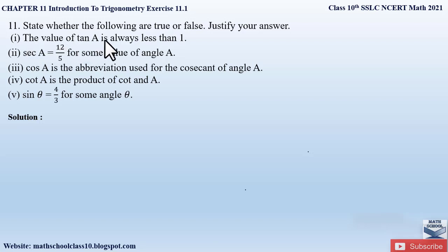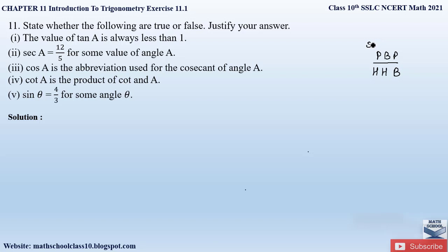The first part of the question states: 'The value of tan A is always less than 1.' Let us find out whether that is true. The trigonometric ratio for tan A — as I have told you, to find any trigonometric ratio remember the relationship P, B, H: sine is perpendicular by hypotenuse, cosine is base by hypotenuse, tan is perpendicular by base, and the reciprocals give cosecant, secant, and cot.